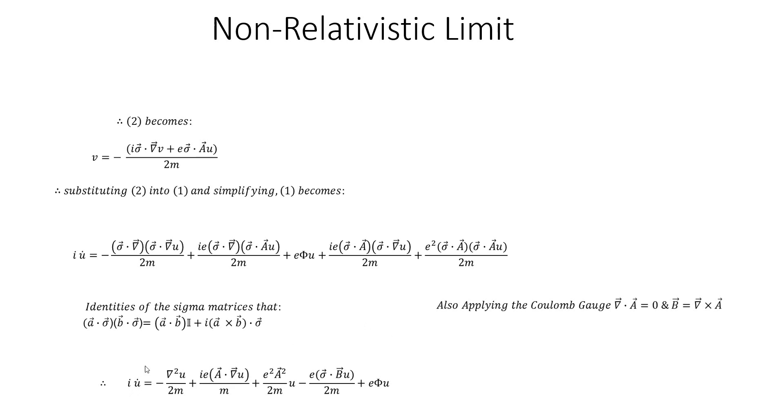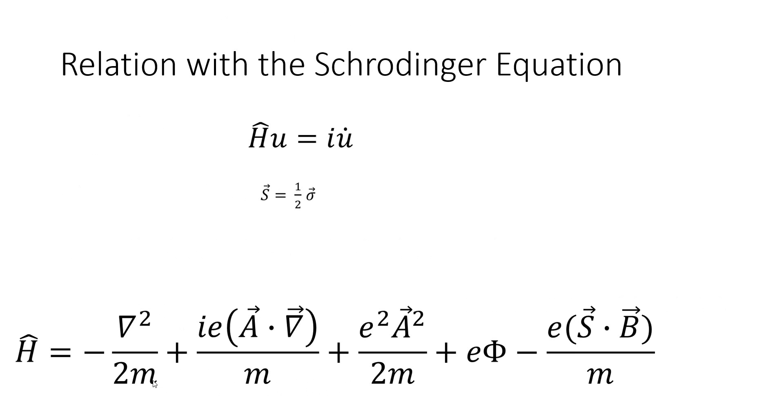Using these two facts, or three, I can write this equation from... I can write equation 1 as this. Now what's interesting is this sort of looks like the Schrodinger equation, which is h u, h acting on u, the Hamiltonian h equals to i u dot.